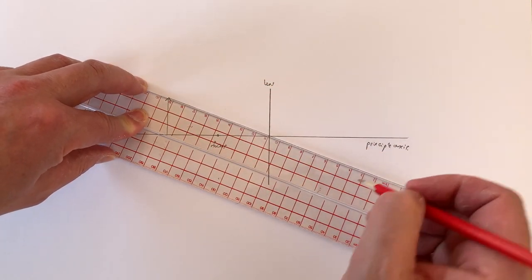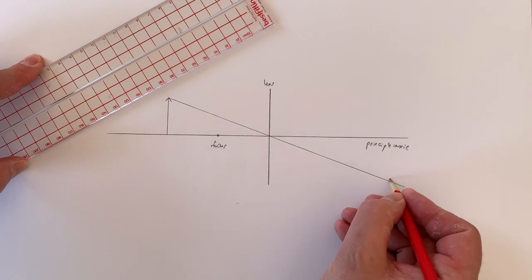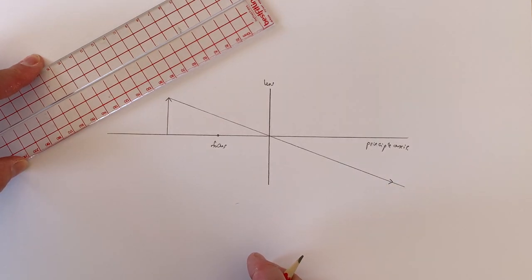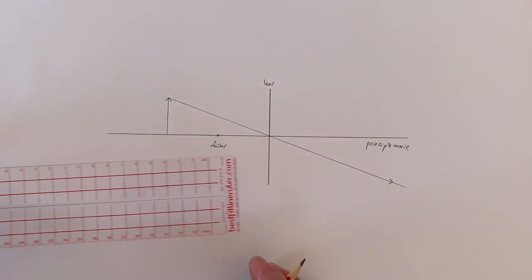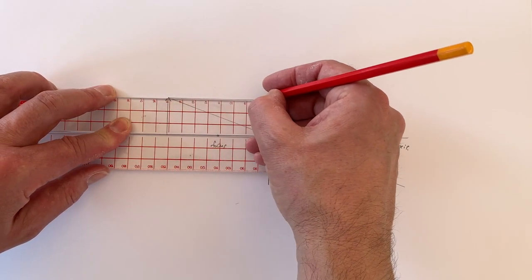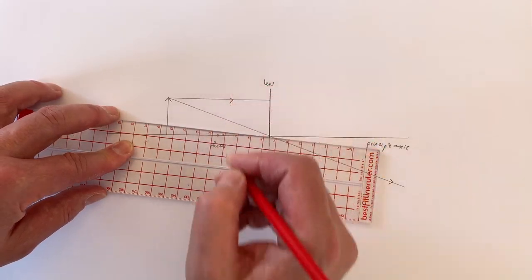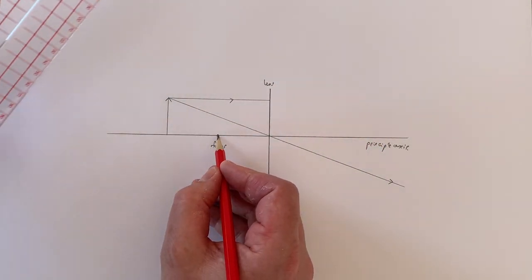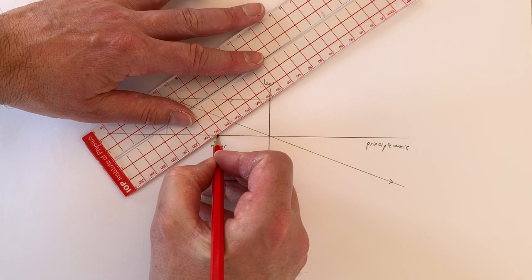The second property we looked at was that any light that is travelling parallel to the principal axis leaves the lens in such a way that it passes away from the focus.